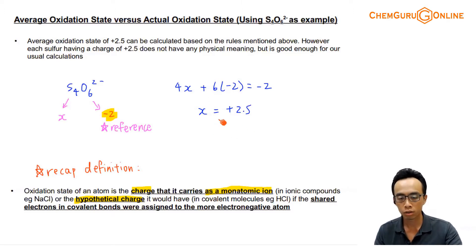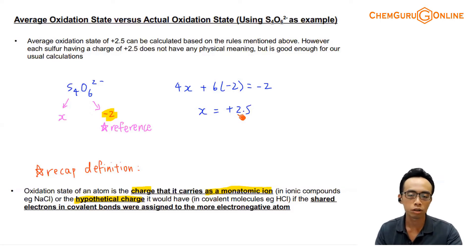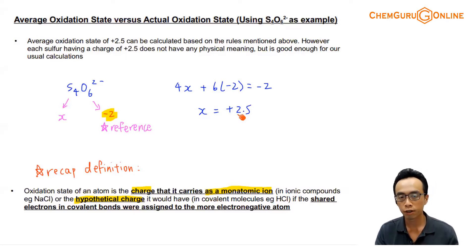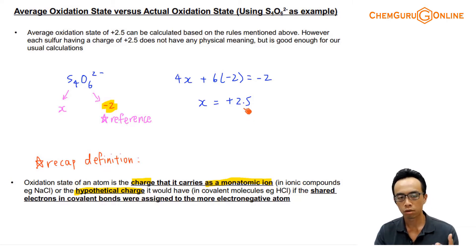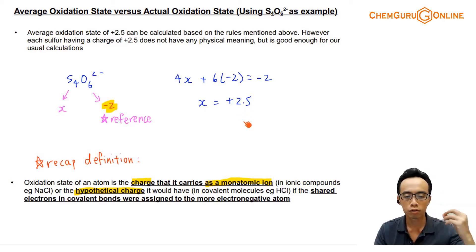So if we do this by calculation, that's the value we get. Previously when we saw 2.5, we just accepted whatever value we calculated as the oxidation number, because we didn't really try to define oxidation state carefully. But now, when we say oxidation state is the charge a species will acquire if it becomes an ion, we realize it is not possible for the charge to be plus 2.5 — because how can you transfer half an electron? It's not possible.